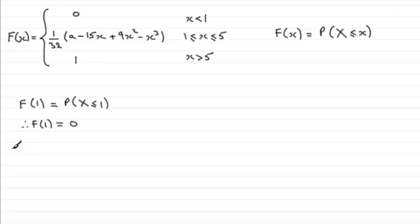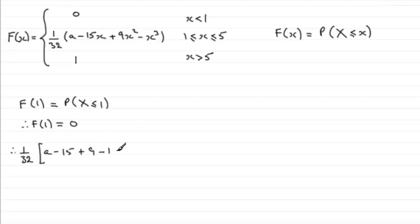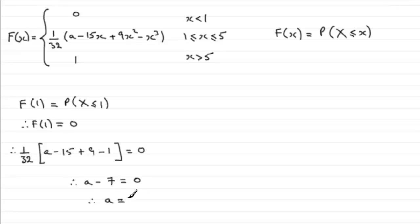If we do that, we have 1 over 32 multiplied by a, minus 15 times 1 which is minus 15, plus 9 times 1 squared which is plus 9, then minus 1 cubed which is minus 1, and that equals 0. Multiplying both sides by 32, the bracket equals 0, leaving us with a minus 7 equals 0. Therefore a equals 7.